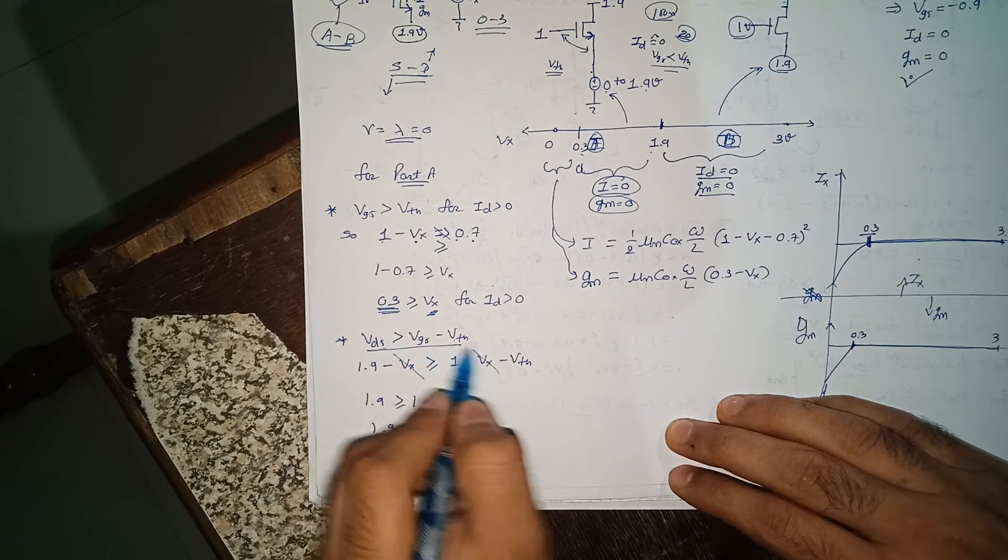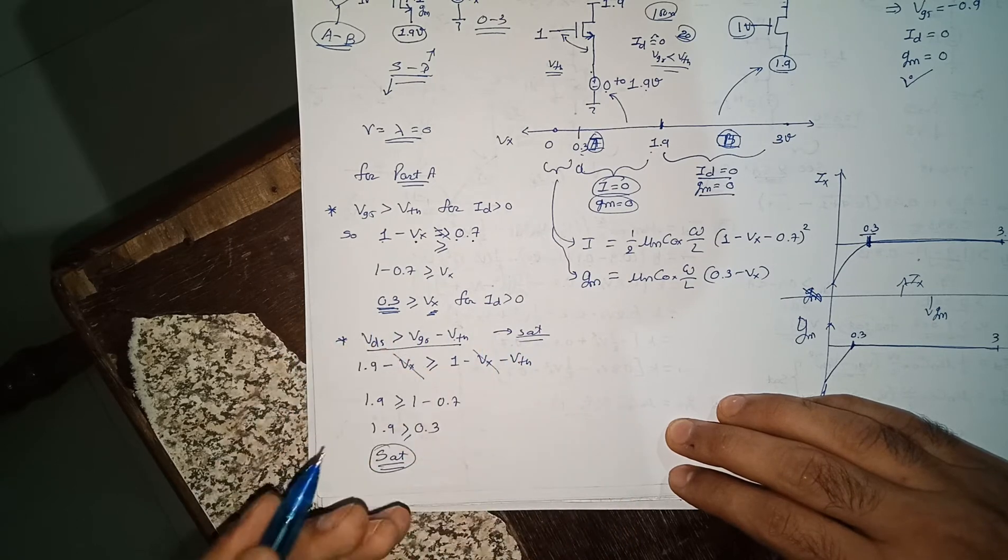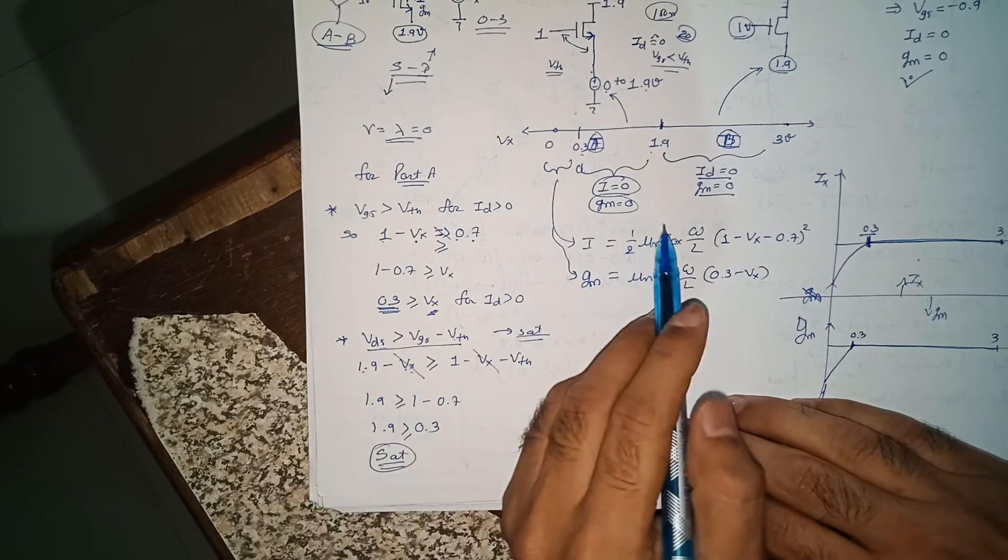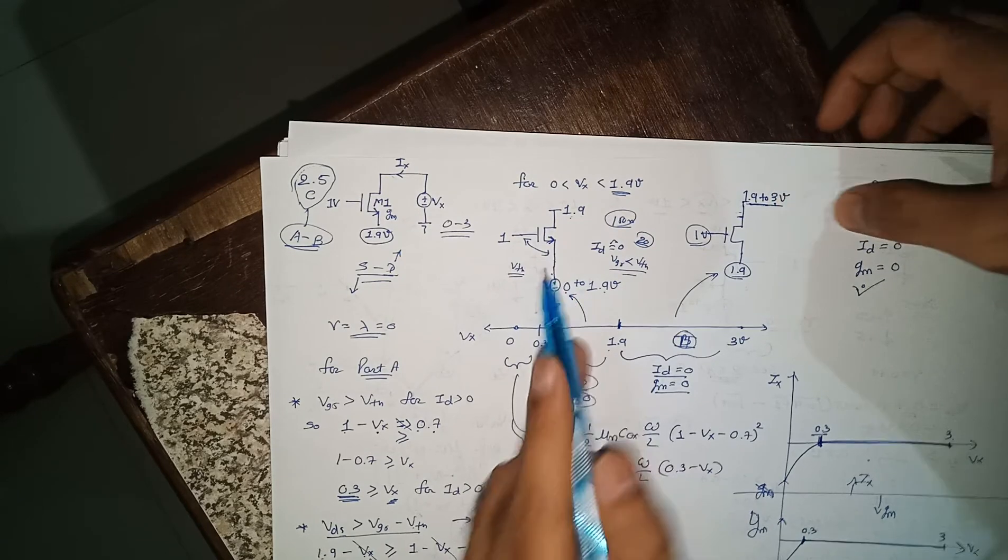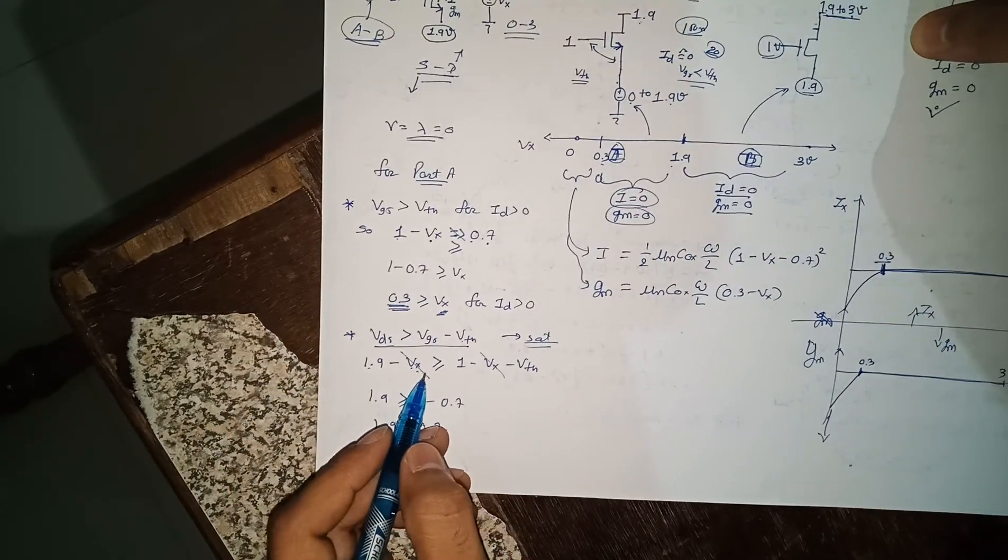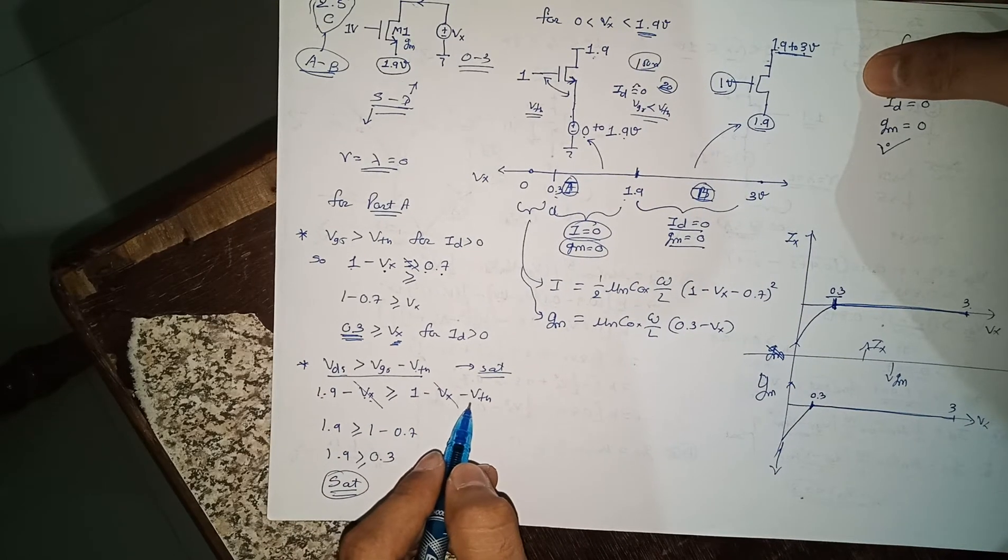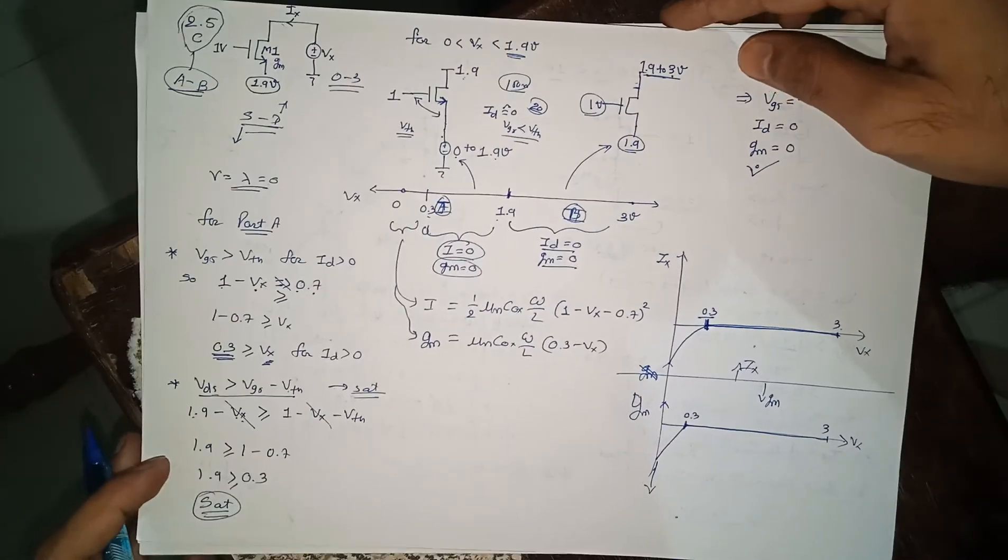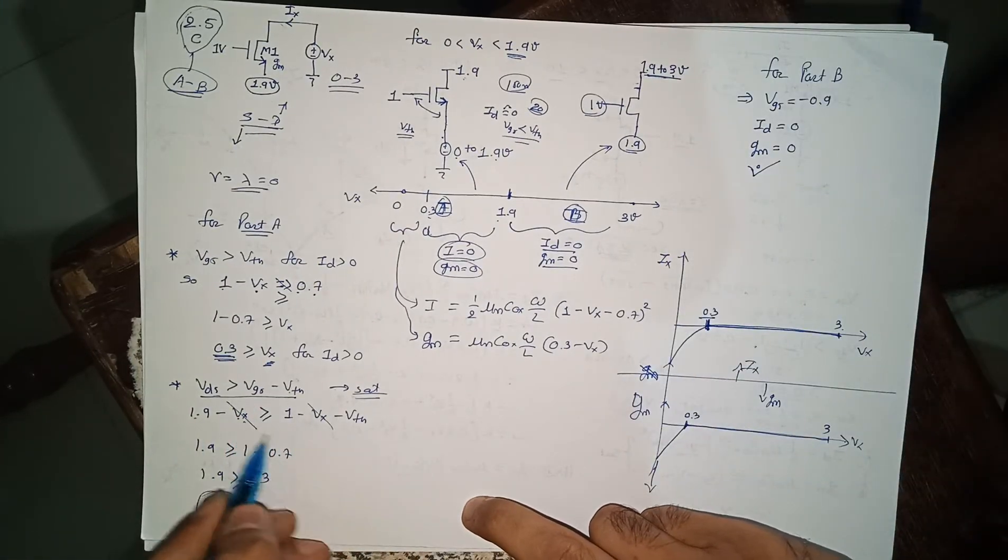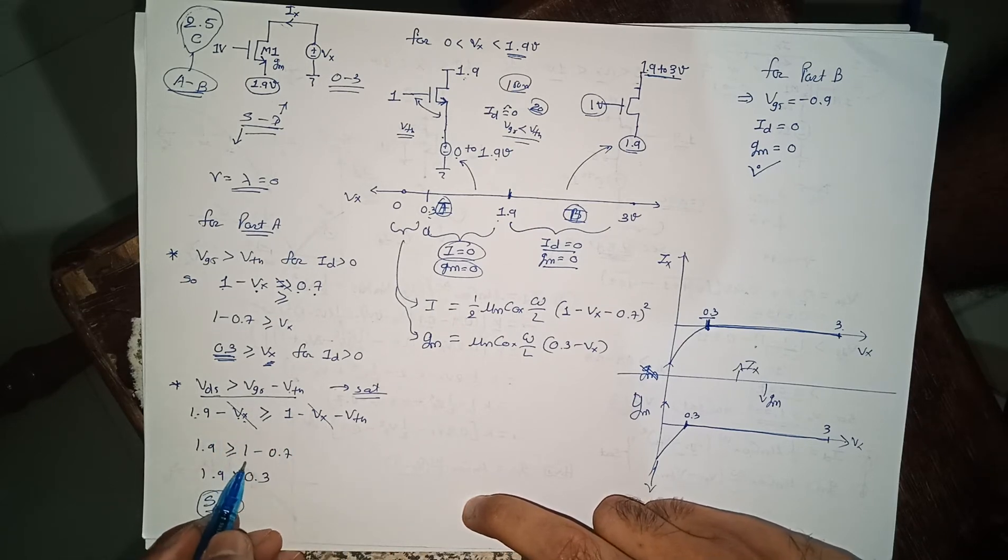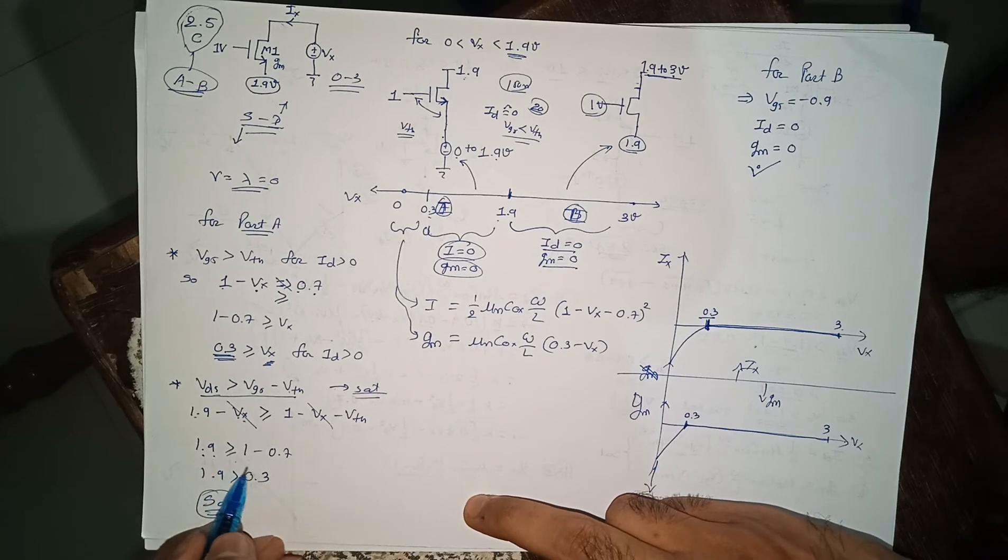Vds is greater than Vgs minus Vth is the saturation condition. Let me see if it is fulfilled or not. 1.9 minus Vx, that is Vds, will be greater than 1 minus 0.7. Vx will cancel out and you will see 1.9 is greater than 0.8. That is always true.